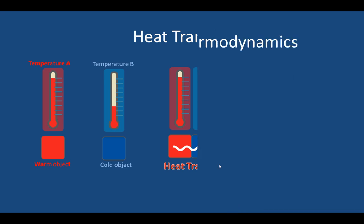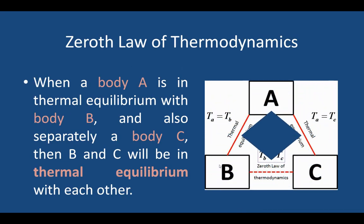This can be understood from the Zeroth Law of Thermodynamics: when body A is in thermal equilibrium with body B, and also separately with body C, then body B and body C will also be in thermal equilibrium with each other. After reaching equilibrium, T_A equals T_B equals T_C.